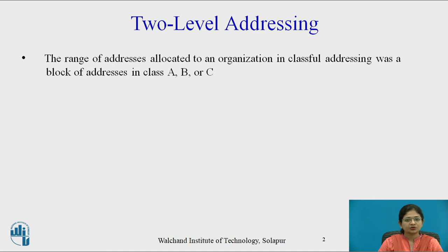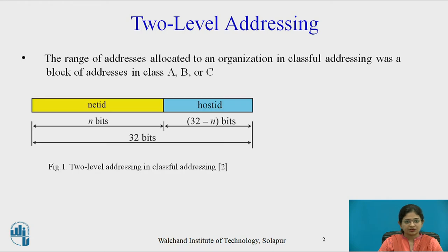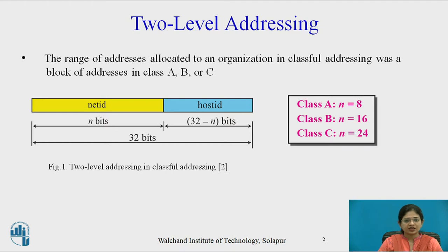Now let's start with 2-level addressing. The range of addresses allocated to an organization in classful addressing was a block of addresses in Class A, B, or C. This diagram shows 2-level addressing in classful addresses. Here, the 32-bit address is divided into two parts: NetID and HostID. NetID is represented by n bits and HostID by 32-minus-n bits. Class A has n equal to 8, Class B has n equal to 16, and Class C has n equal to 24 bit NetID.